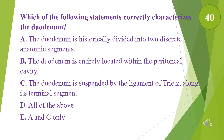Which of the following statements correctly characterizes the duodenum? A. The duodenum is historically divided into two discrete anatomic segments. B. The duodenum is entirely located within the peritoneal cavity. C. The duodenum is suspended by the ligament of Treitz along its terminal segment. D. All of the above. E. A and C only. The answer is C.